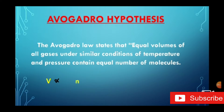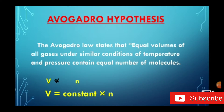This is represented as V is proportional to N, where V means the volume of gas and N means the number of molecules of gas. That is, the volume of gas is directly proportional to the number of molecules of gas, and V is equal to a constant multiplied by N.